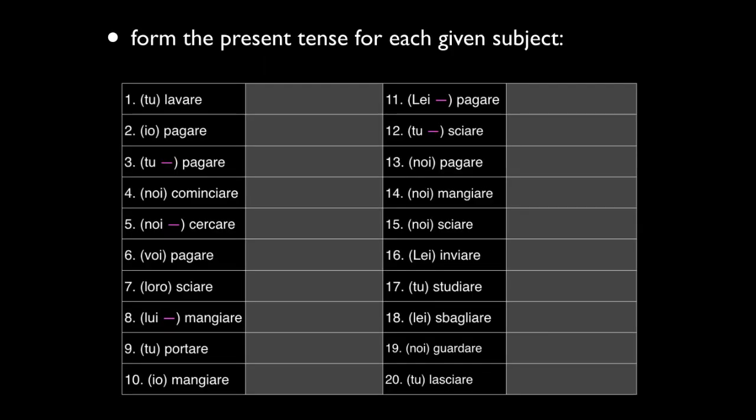Now we go on to the exercises for these ARE verbs with spelling changes. I've mixed in a couple of verbs where there's no spelling change, just so you can see the difference and provide some contrast. Here's the first one: LAVARE conjugated with TU — that's LAVI. Nothing special there, just a regular verb. Pause the video and do the rest, and I'll give you the answers in a few minutes. Also note the magenta minus sign — I'm going to make those negative, which is easy: just put NON in front of the verb. Number two: IO PAGO — straightforward, no spelling change.